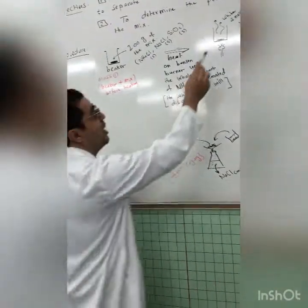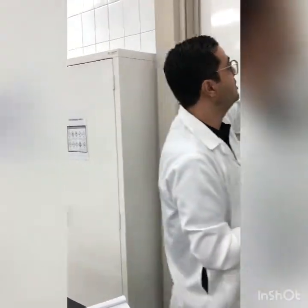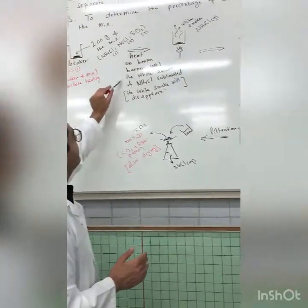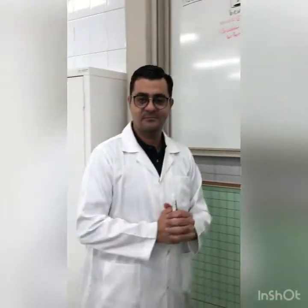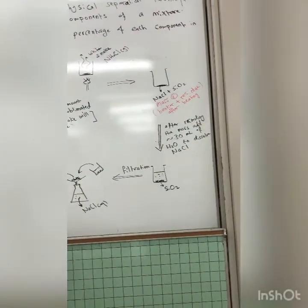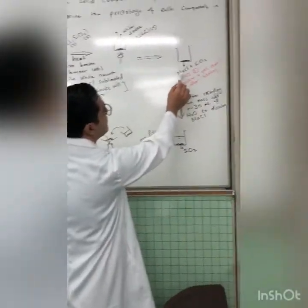After heating, ammonium chloride will sublime and appear as white smoke. You will observe the appearance of white smoke, which represents the gaseous ammonium chloride. We should stop the heating process when the white smoke disappears, which means the entire amount of ammonium chloride has sublimated. After this step, we will end up with a beaker containing the remaining residue — sodium chloride and silicon dioxide.